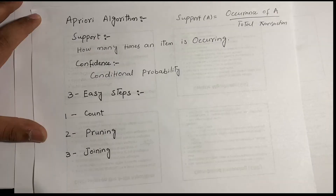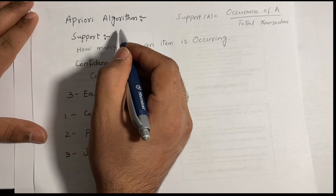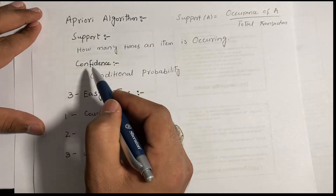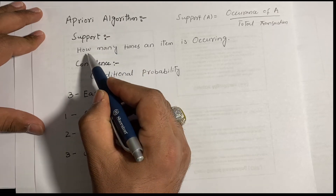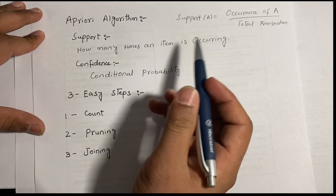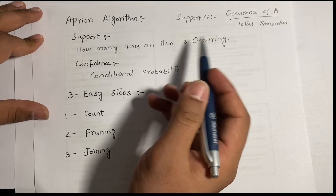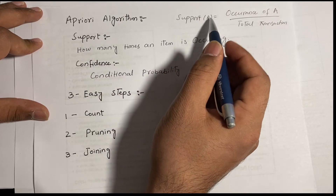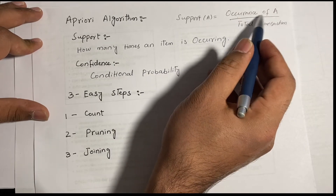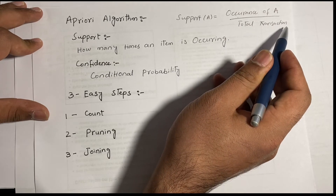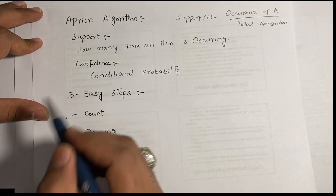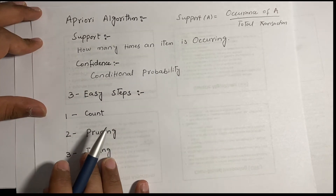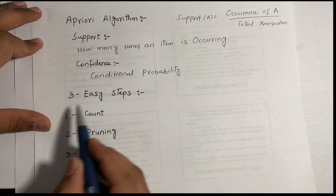In the Apriori algorithm we will use two terms: support and confidence. Support is how many times an item is occurring in the database or in transactions. To find support, we use the formula: occurrence of A divided by total number of transactions. Confidence is a conditional probability, which we will discuss at the end.